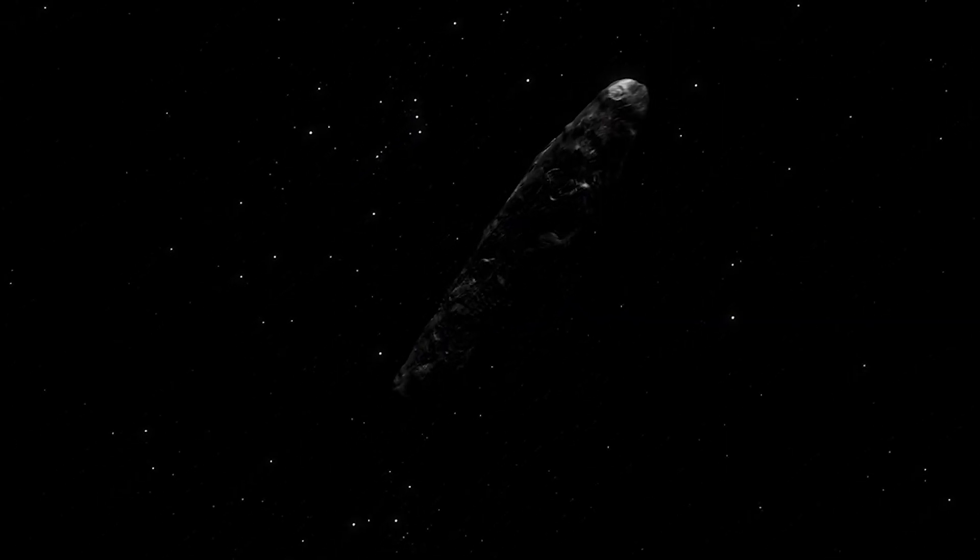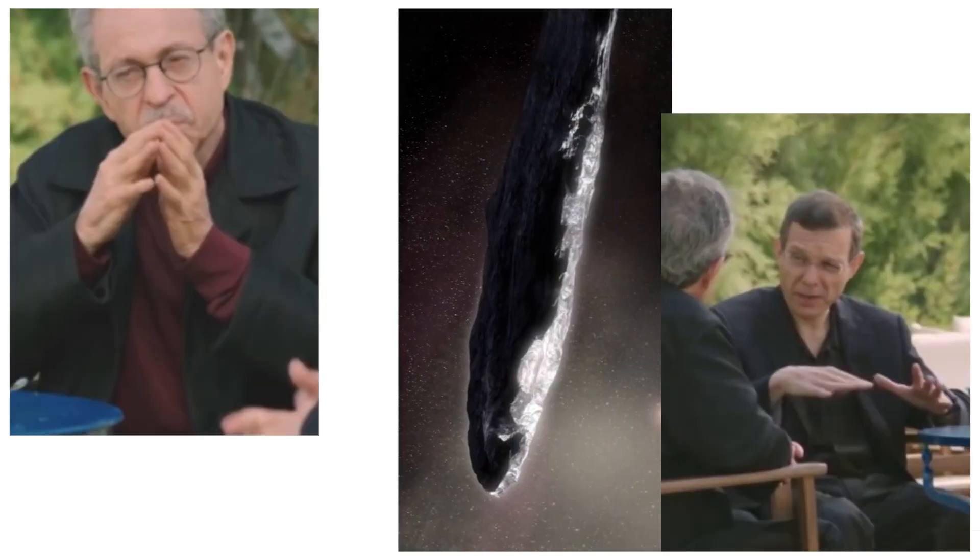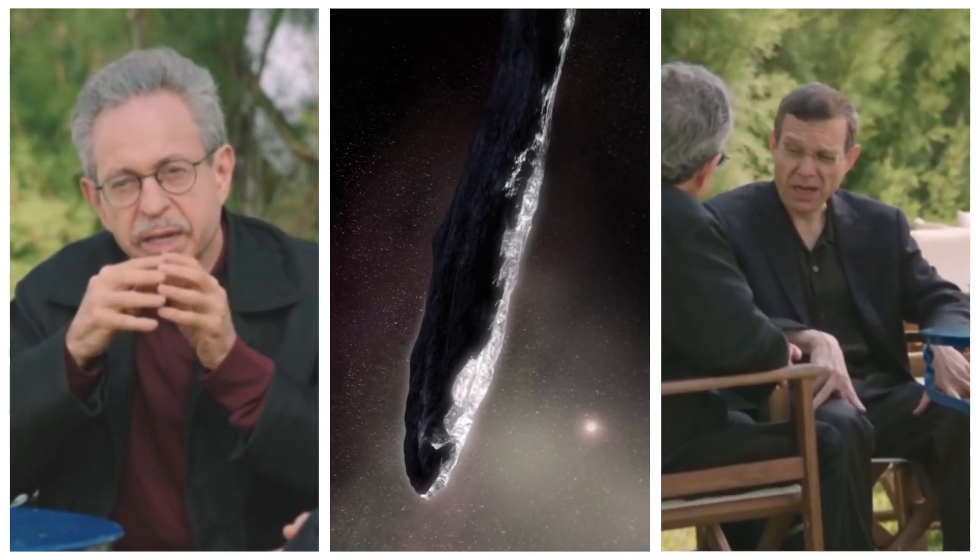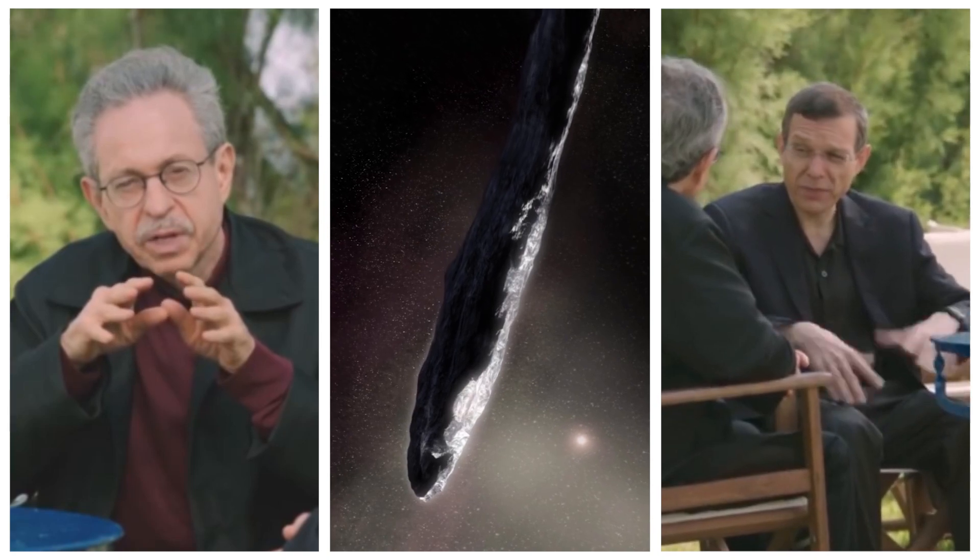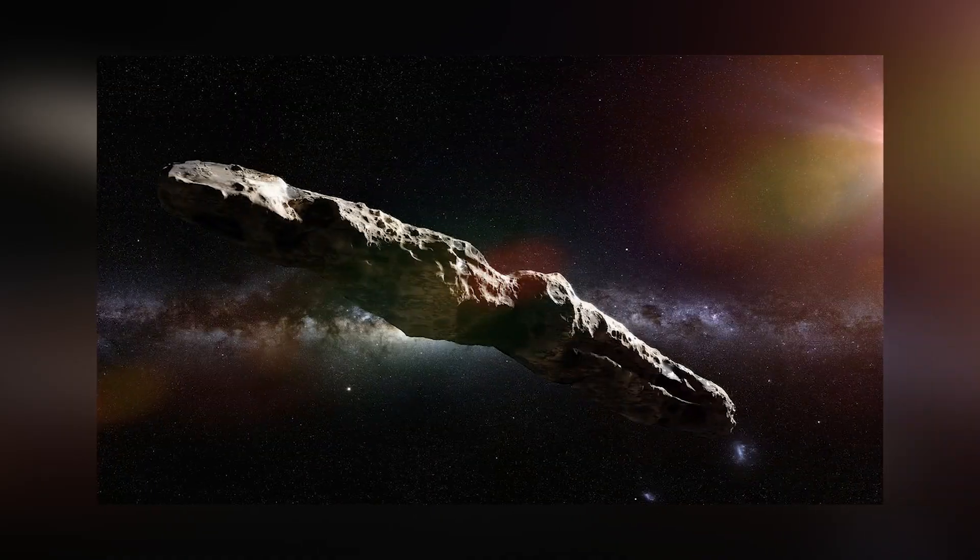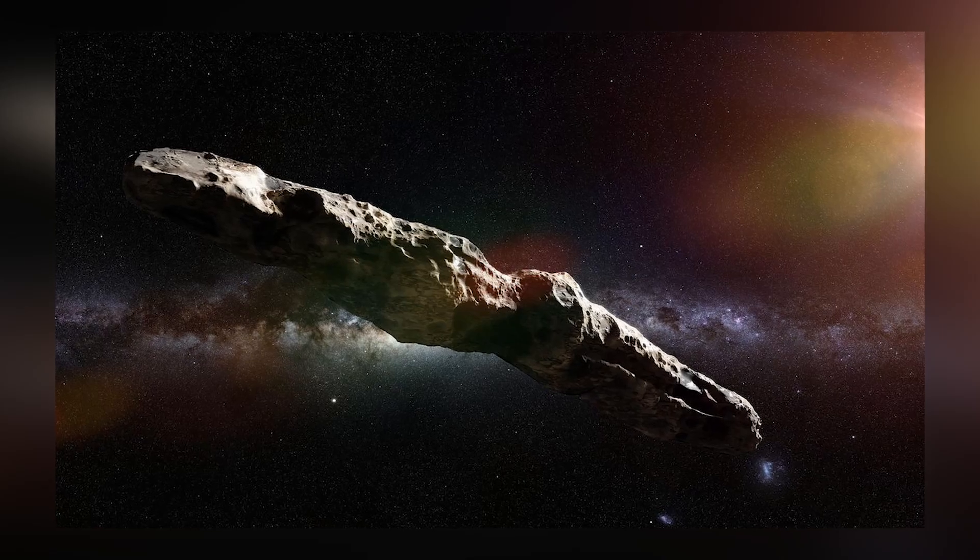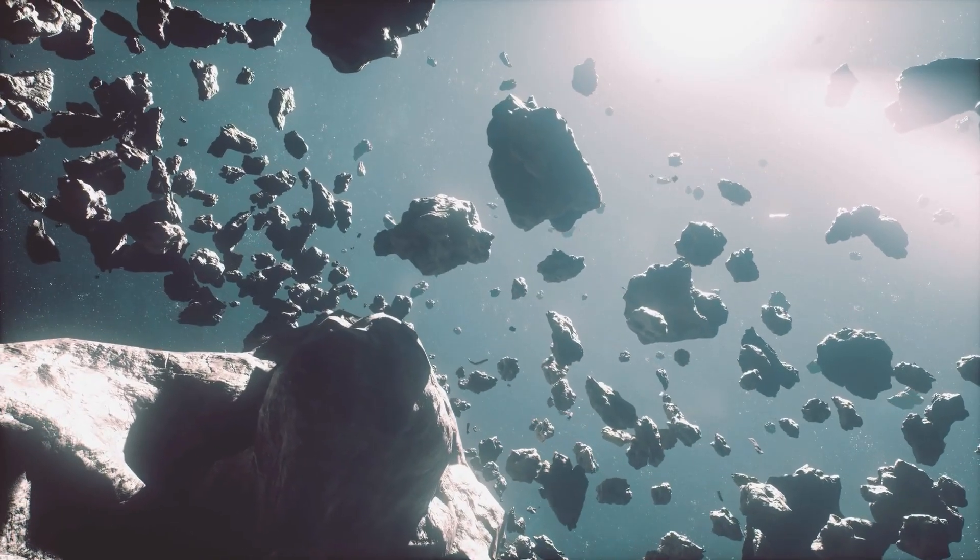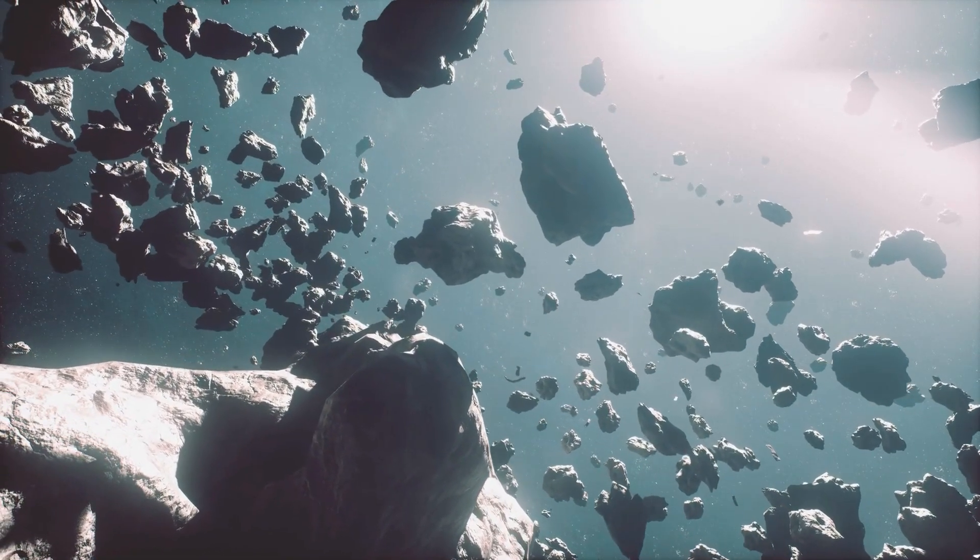Initially, scientists thought Oumuamua might be a comet due to its odd behavior. However, it was later classified as an asteroid, similar to those in the asteroid belt between Mars and Jupiter.